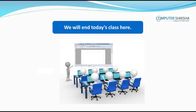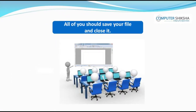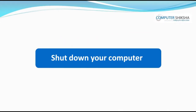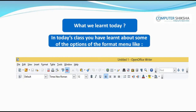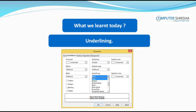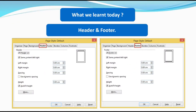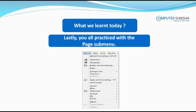Since we will end this class here, all of you should save your writer file at some place on your computer and then properly shut down your computer. In today's class, all of you learned about some of the options of the format submenu like font color, overlining, underlining, and also about options of the paragraph like header and footer. Lastly, you all practiced with the page submenu. Thank you.